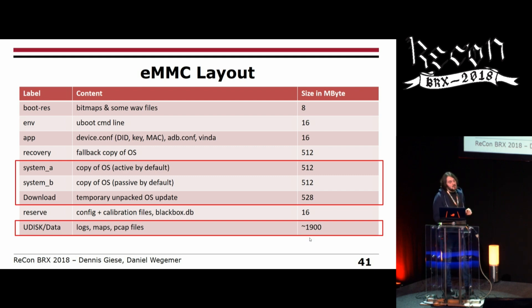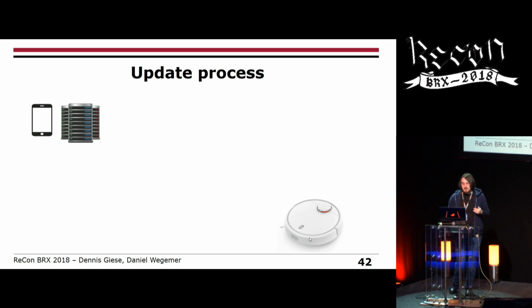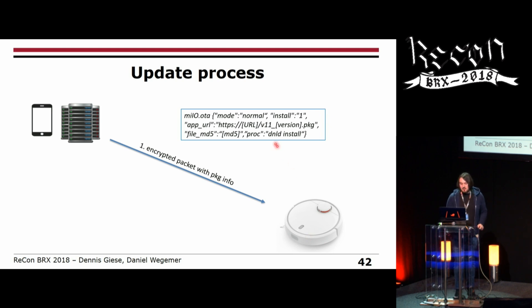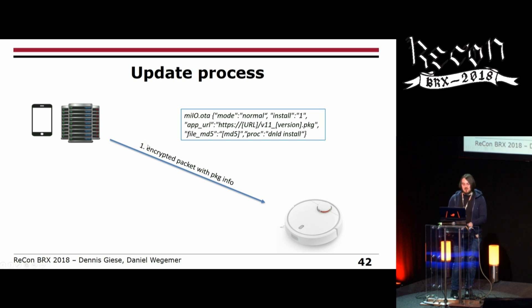Let's look at the update process. The cloud sends a command called MIIO OTA update, telling the vacuum cleaner where the update is located — which web server has it — and also providing the MD5 checksum of the update. This ensures that the download will be integrity-protected.